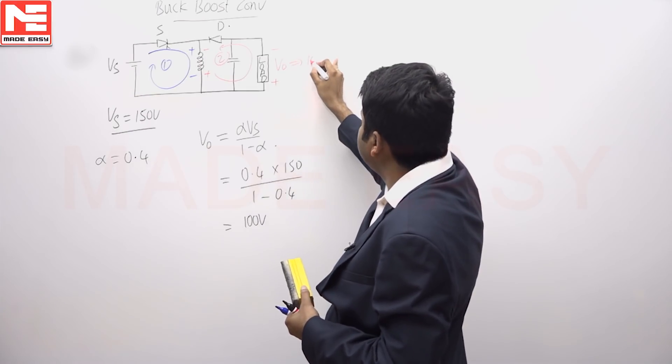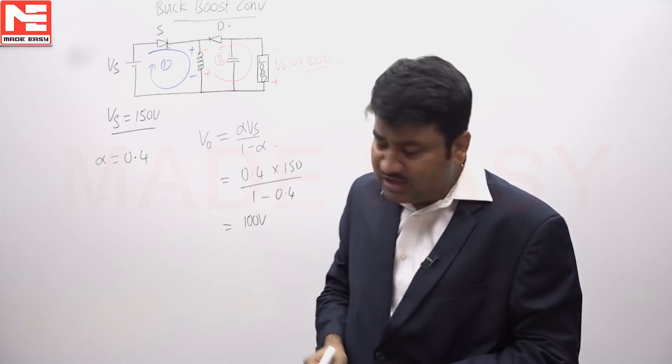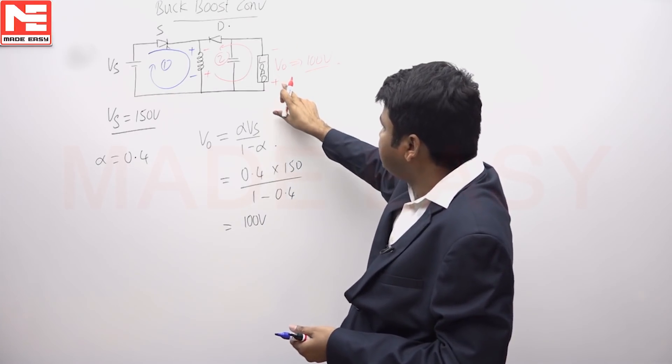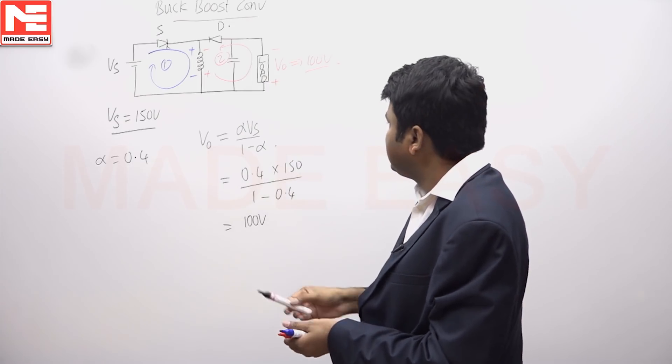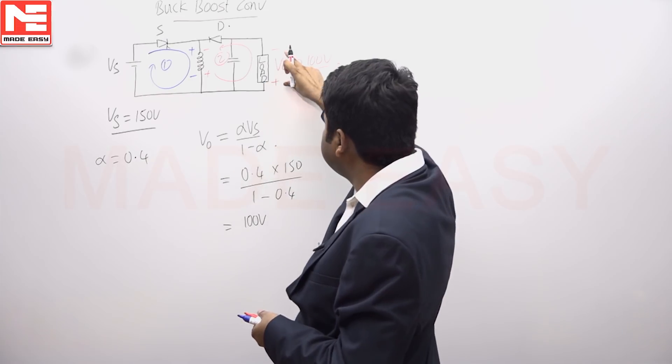This value is 100 volts, but as per the given circuit diagram the voltage reference is opposite to the actual value. That is why we can say according to the reference indicated in the given circuit diagram, this is opposite.